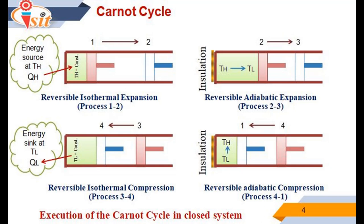The third process of the Carnot cycle is reversible isothermal compression, process 3 to 4, with TL constant at state 3. The insulation at the cylinder head is removed and the cylinder is brought into contact with the sink at temperature TL. The piston is pushed inward by an external force, doing work on the gas. As the gas is compressed, its temperature tends to rise, but as soon as it rises by an infinitesimal amount dT, heat is transferred from the gas to the sink, causing the gas temperature to drop back to TL. Thus the gas temperature remains constant at TL, since the temperature difference between the gas and sink never exceeds a differential amount dT — this is a reversible heat transfer process. It continues until the piston reaches state 4. The amount of heat rejected from the gas during this process is QL.